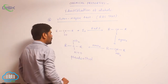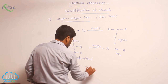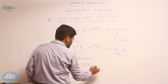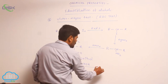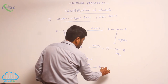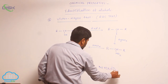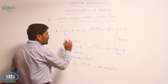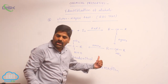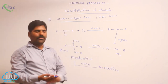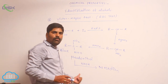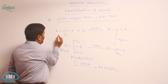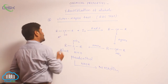When this pseudonitrole reacts with a base, there is no reaction, but the color observed is blue. So, the second-degree alcohol gives a blue color in the Victor Meyer test. Earlier the first-degree alcohol gave a red color; now the second-degree alcohol gives a blue color.